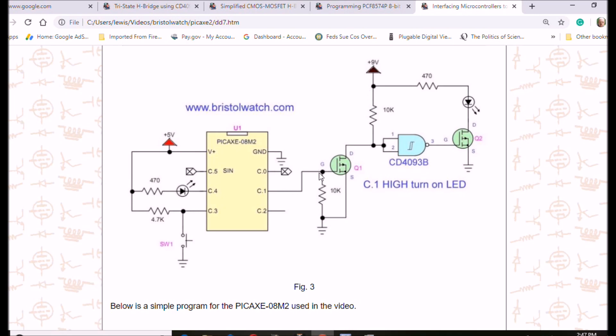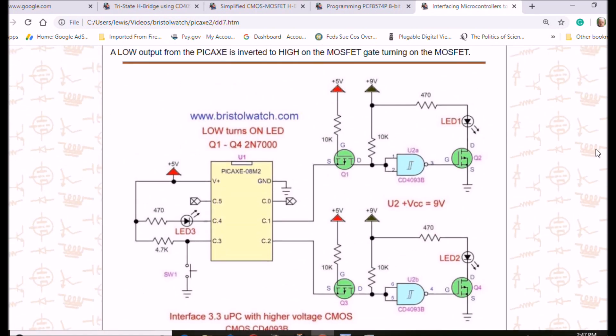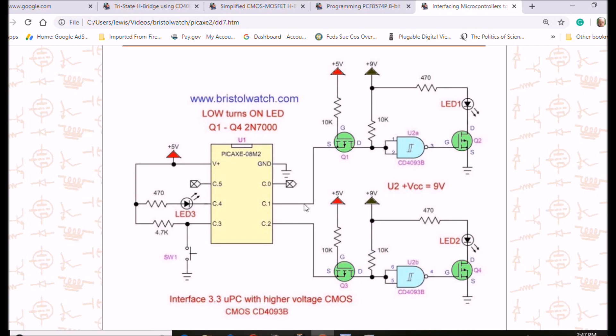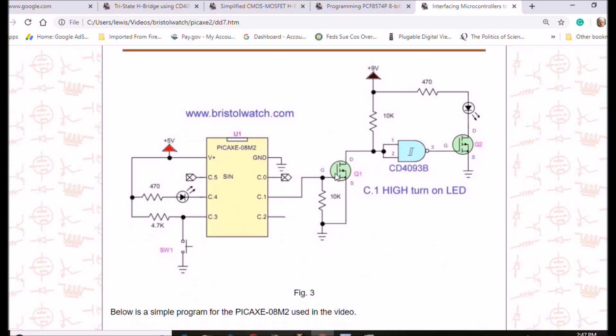If you have a high in, you're going to have a low out, which is going to be inverted to a high on the gate of Q2, and switches on the LED. So high in, LED on. A low in here, LED on. So this is non-inverting. This is inverting. Here I've got a three or five volt microprocessor again, managing to operate a nine volt CMOS MOSFET circuit.